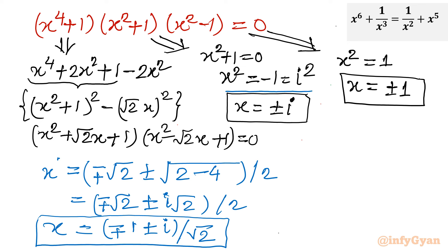Summarizing Method 1: we have 4 complex solutions from the two quadratics, 2 complex solutions (±i) from x^2 + 1 = 0, and 2 real solutions (±1) from x^2 - 1 = 0 — giving 8 solutions. Together with x = 1 from the very first factor, we have overall 9 solutions: 6 complex and 3 real, with +1 appearing twice.